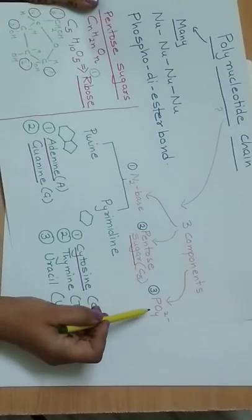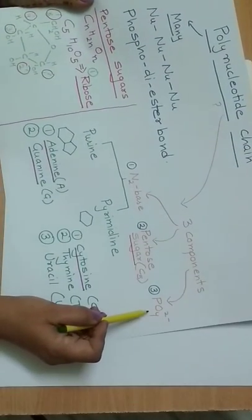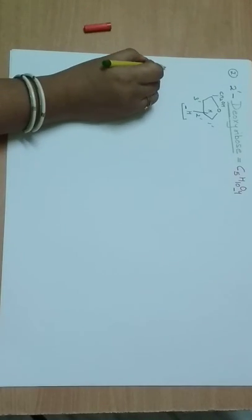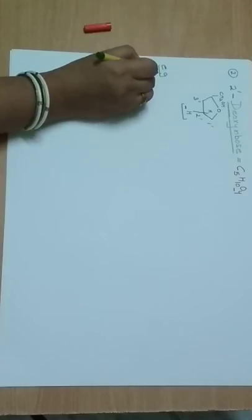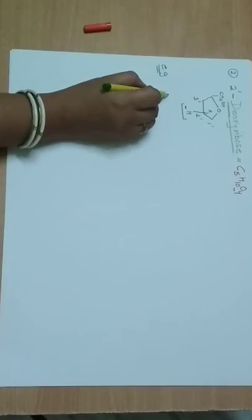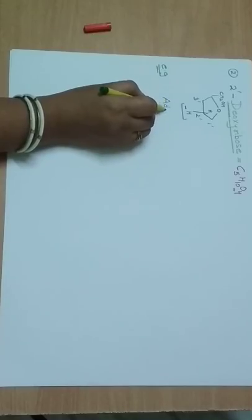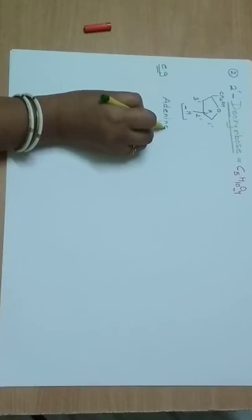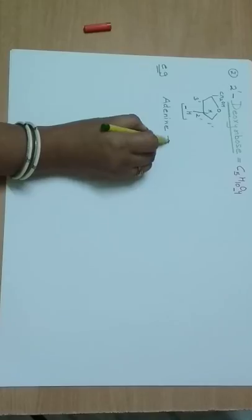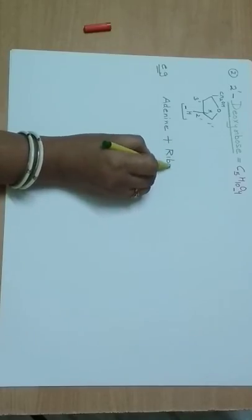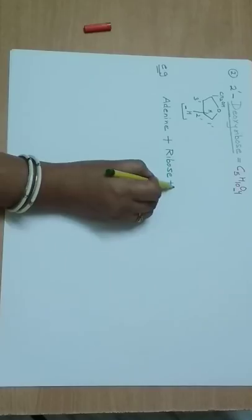A nucleotide consists of three components: a nitrogenous base, a pentose sugar, and phosphate. For example, if we take adenine as the nitrogenous base and ribose as the sugar, plus a phosphate group, we get a nucleotide.